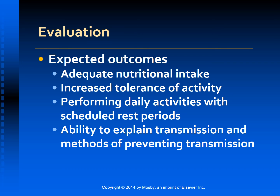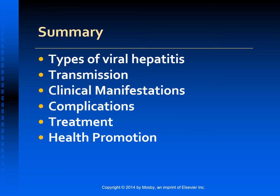The expected outcomes for a patient with hepatitis are that the patient will maintain adequate food and fluid intake to meet nutritional needs, demonstrate gradual increase in activity tolerance, perform daily activities with scheduled rest periods, and be able to explain transmission and how to prevent it. In summary, this series covered the different types of viral hepatitis — A, B, C, D, and E — and their transmission, clinical manifestations, icteric and post-icteric manifestations, complications, treatment, and health promotion.